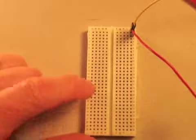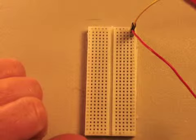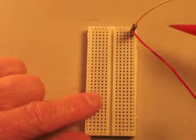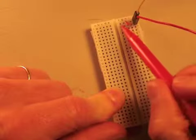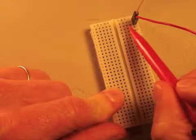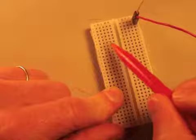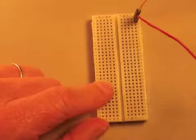these two jumper wires are not connected underneath. It is only the rows that are connected from left to right. The columns are not connected.